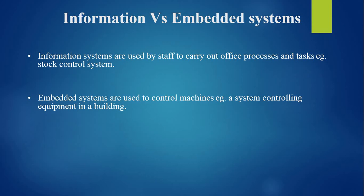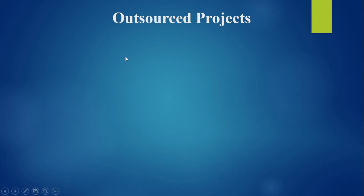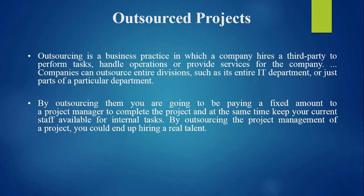A process control system might control the air conditioning equipment in a building. Some systems may have elements of both, such as where a stock control system also controls an automated warehouse. Embedded systems are also called real-time or industrial systems.